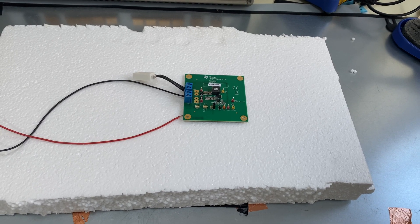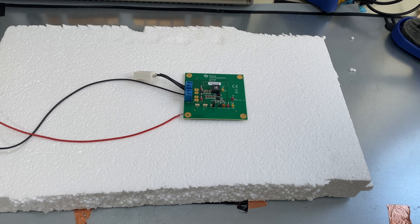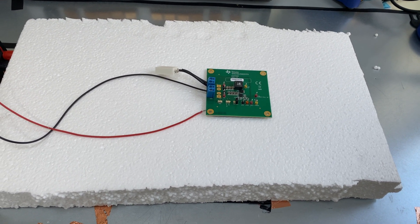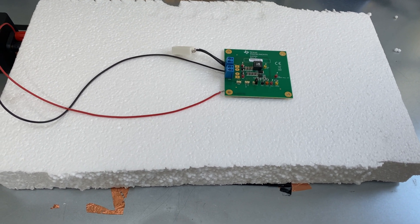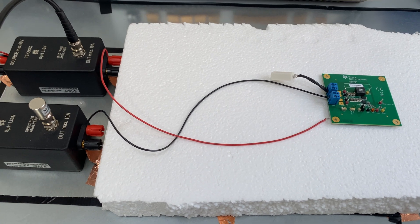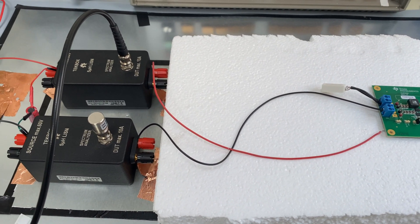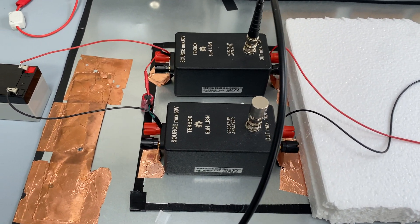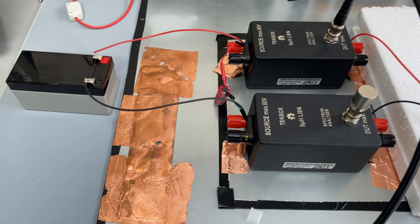Here is the setup for a pre-compliance conducted emission test setup for automotive applications. This is the DUT, which is a TI evaluation board. The DUT is connected to two LISNs. These two LISNs are designed for DC. One LISN is connected to a spectrum analyzer, the other one is terminated with 50 ohms.